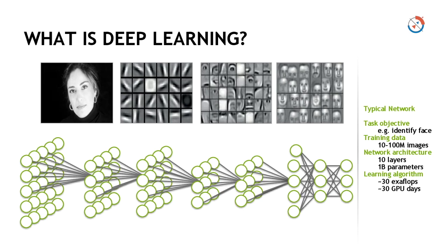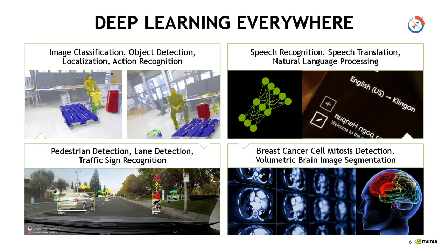The approach to deep learning mimics the way the human brain works. What I explained using image recognition is just one area — we call it image recognition. There are a couple more: the same logic can be applied to do wonders in speech, and then there is natural language processing, a very advanced technique where you make sense out of long sentences and complex narratives.